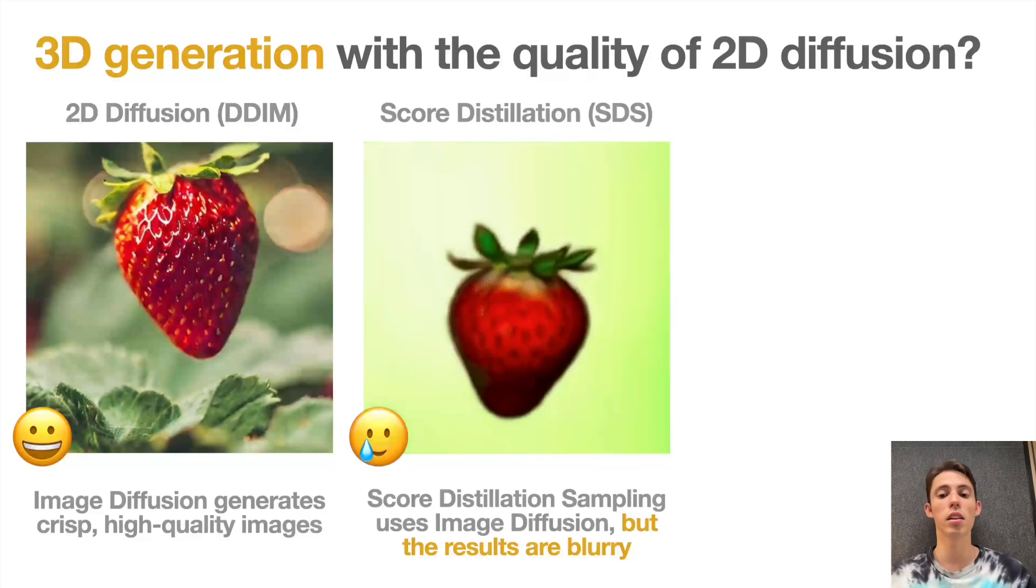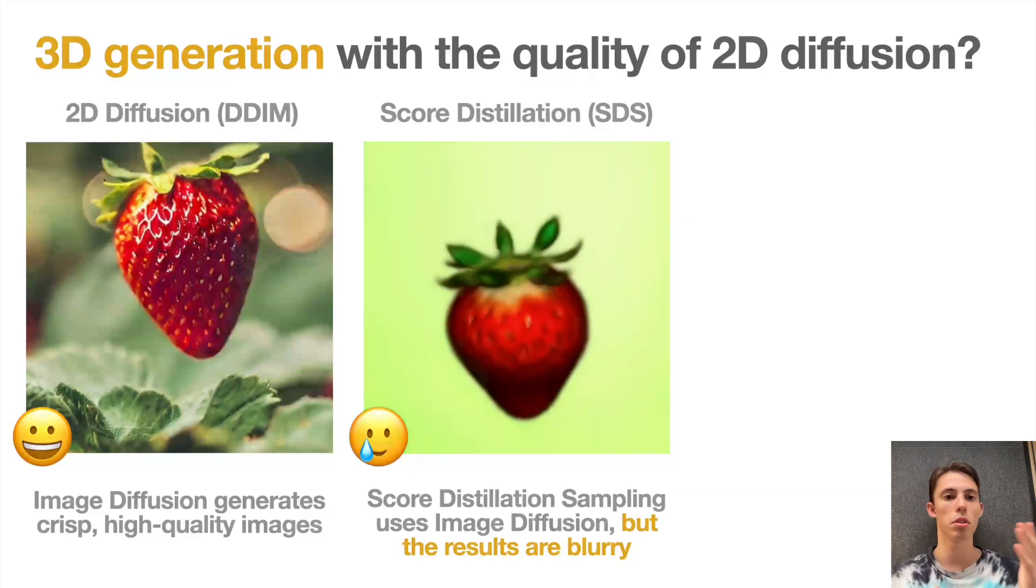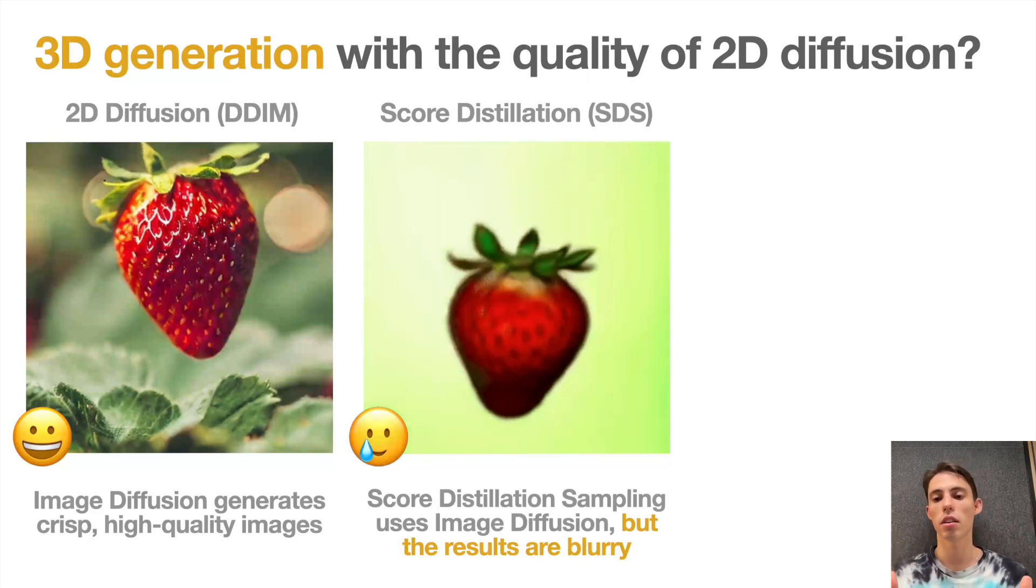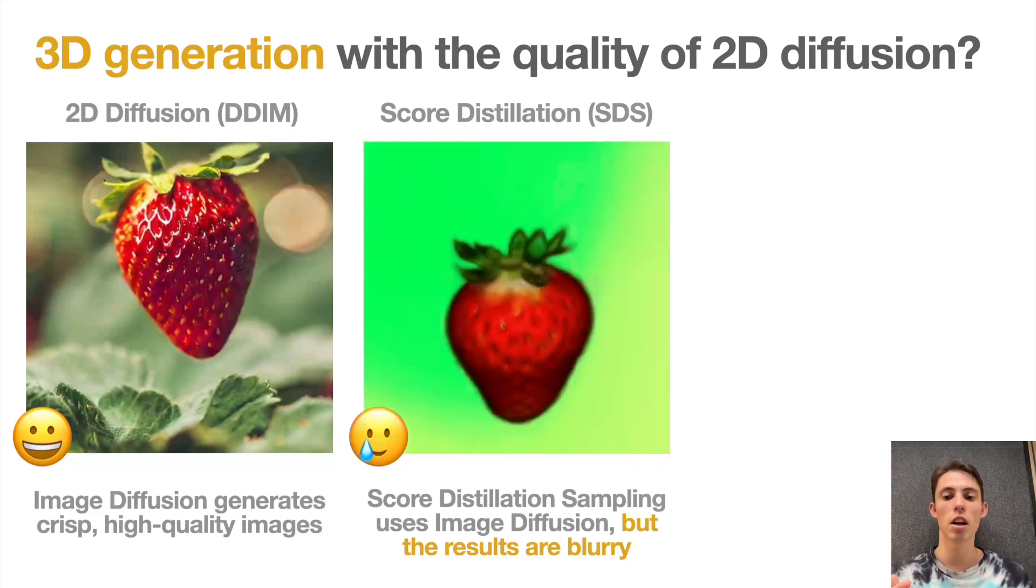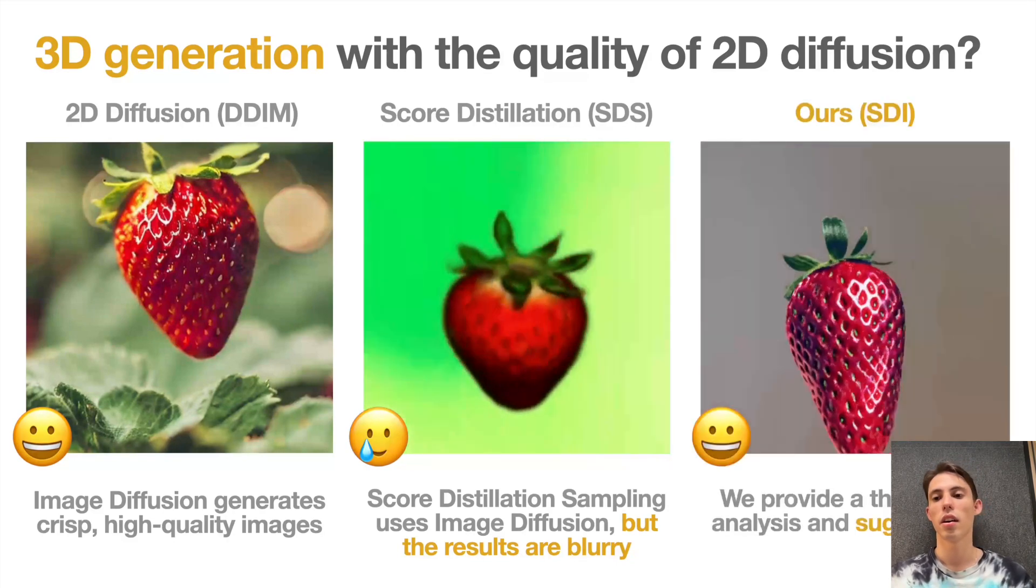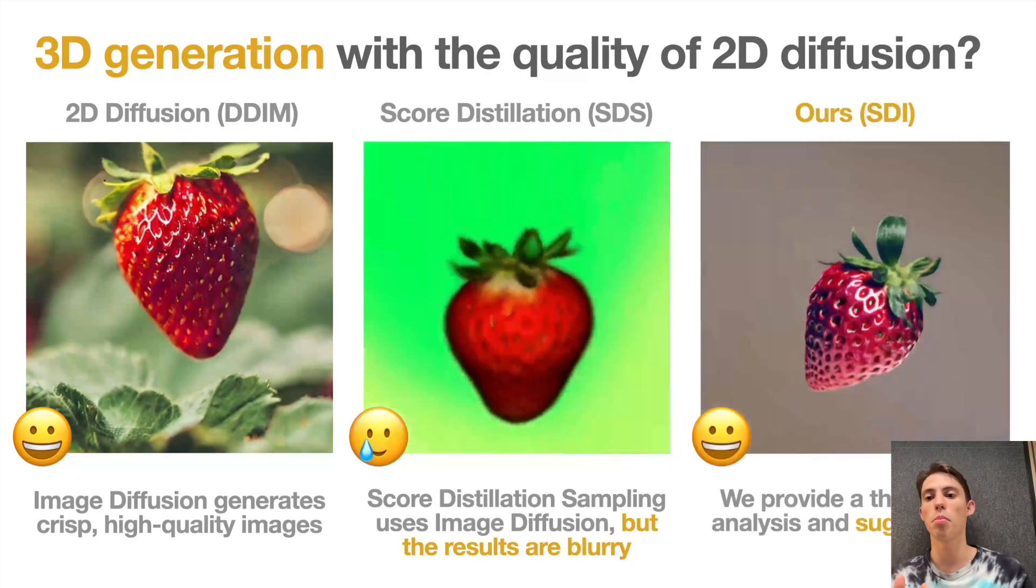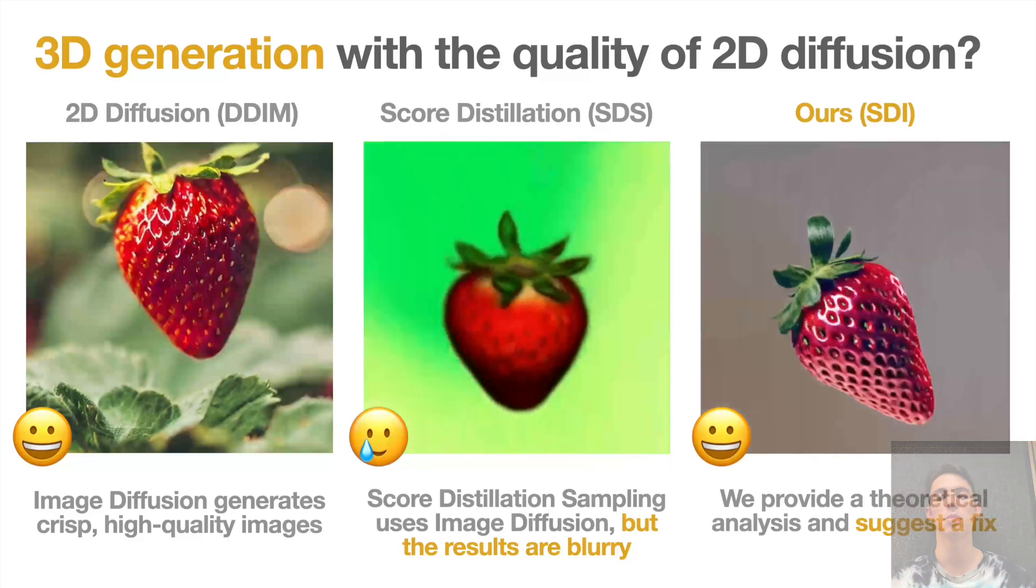So in this work we analyze the relationship between the 2D diffusion model and SCORE distillation. Our insight is that there is a problematic term in SCORE distillation, particularly the noise term sampled on each iteration. We suggest a simple fix and this allows us to avoid the blurriness in the results and it closes the gap between the quality in 3D and 2D images.